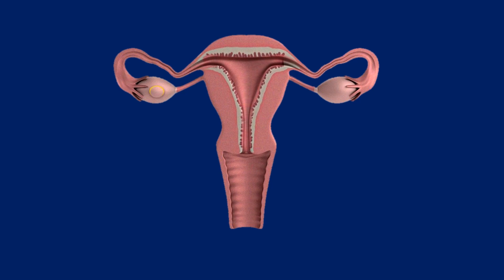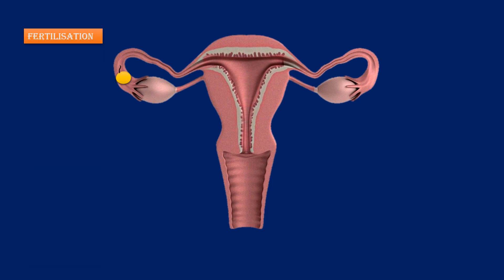At a specific point, the ovum is released from the ovary — this is called ovulation. One of the sperms lucky enough to reach near the ovum fuses with the ovum; this is called fertilization. The fertilization occurs in the oviduct. After fertilization, if other sperms want to penetrate the ovum, their penetration is restricted by the ovum.